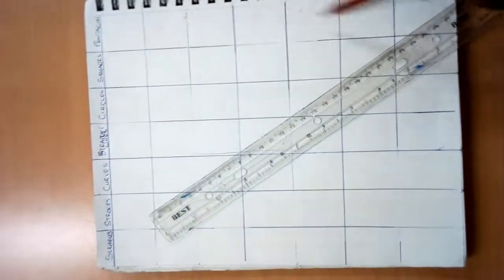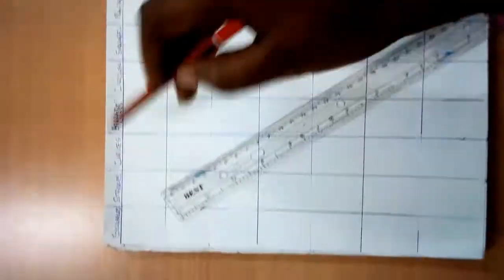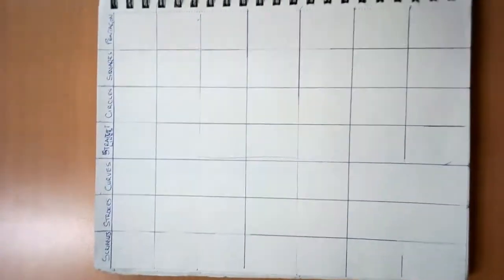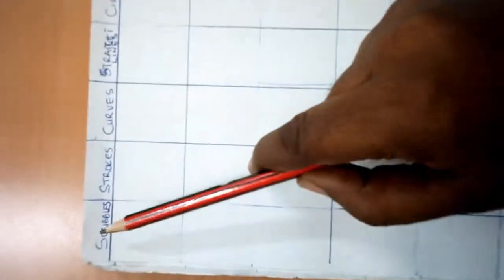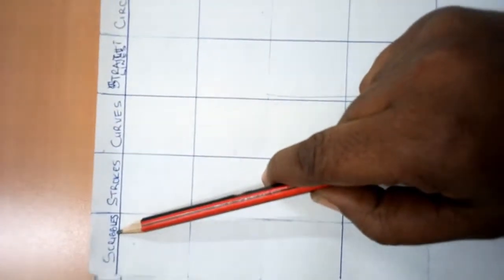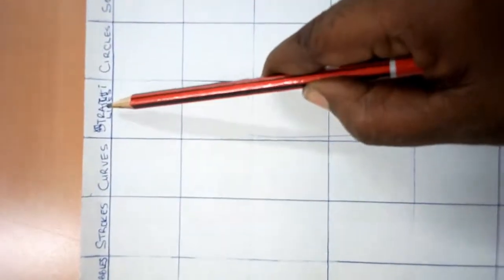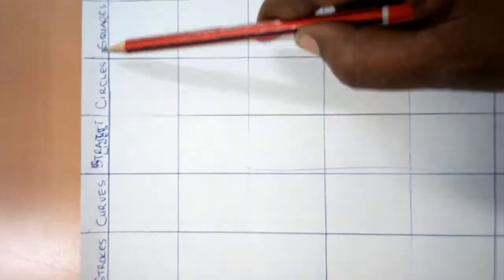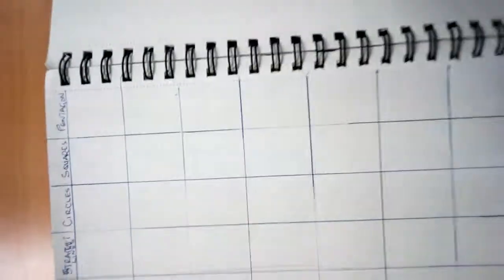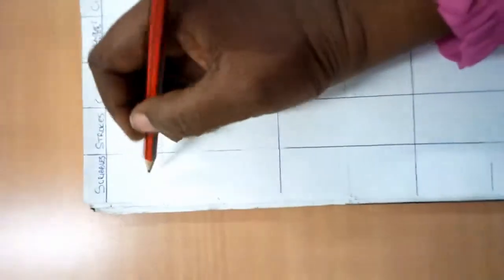Just see what I'm doing here. You draw some squares and then you label the scribble, the strokes, the curves, the straight lines, circles, squares, you know, as many as you like, because you are going to be working on them.